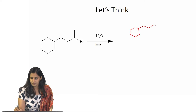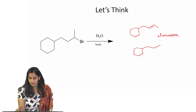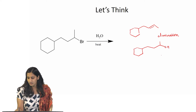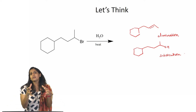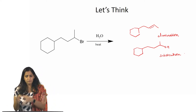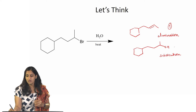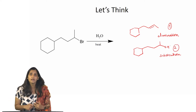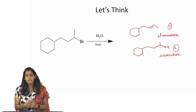Either it can form an elimination product or it can form a substitution product. In the case of a substitution product it is going to result in an alcohol, and in the case of elimination it is going to result in an alkene. Now, you want to really know — because you have done the reaction in a flask and formed the product — which one of these two occurred, whether it is elimination or substitution, or is it a mixture of the two.